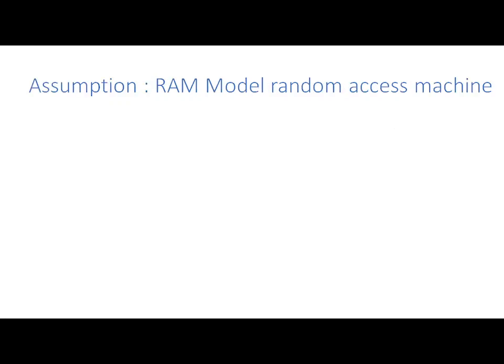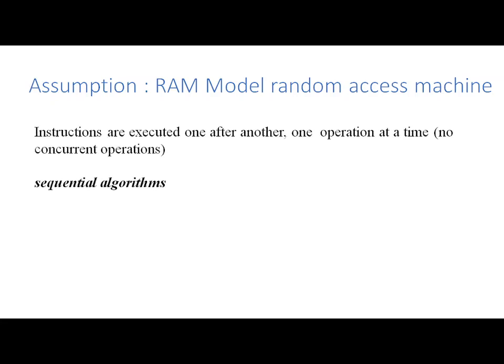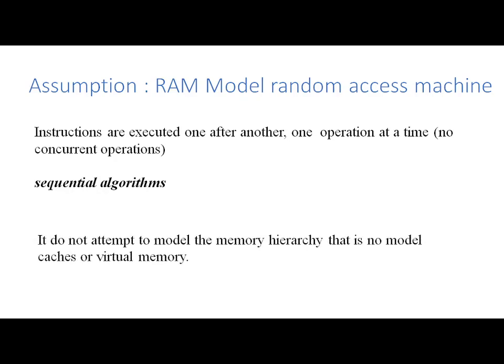For our study purpose, we are going to make an assumption that we are going to derive a computational complexity based on your RAM model which is random access machine. Here, we believe that the instructions are executed one after another, that is there are no concurrent operations. Only one operation is performed at an algorithm and the algorithms that make use of this kind of instructions, we call them as your sequential algorithms. Again, we do not attempt to model any memory hierarchy. We do not consider cache, virtual memory and all those things. We are going to consider a simple model where we believe the instructions are executed one after another.